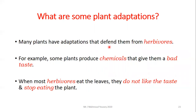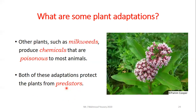Many plants have adaptations that defend them from herbivores. Some plants produce chemicals that give them a bad taste. When herbivores eat these leaves, they do not like the taste and stop eating the plants. Other plants such as milkweeds produce chemicals that are poisonous to most animals. Both of these adaptations protect the plants from predators.